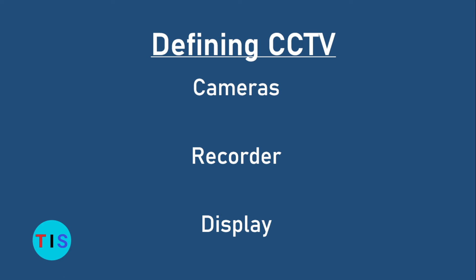Let's define CCTV. CCTV, as you may be aware, is Closed Circuit Television. Every CCTV system comes with three basic parts: cameras, recorders, and display. I'll be getting to explain all of these as we go along and I'll be showing you each of these things, so it's not going to be just theory — we'll get to see all of these things one after the other.